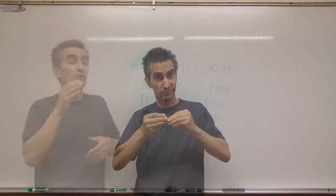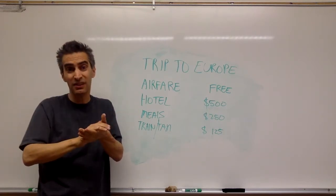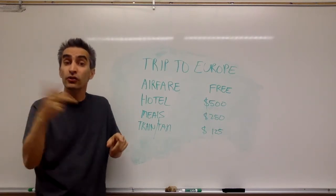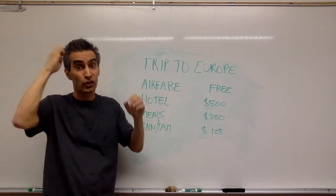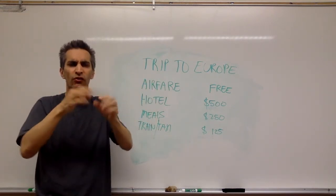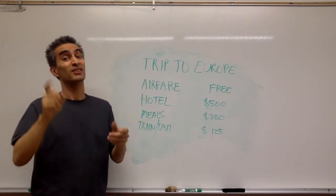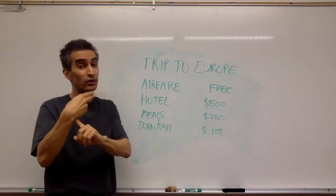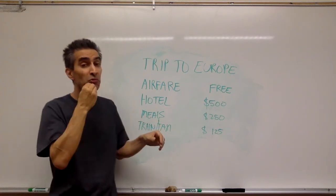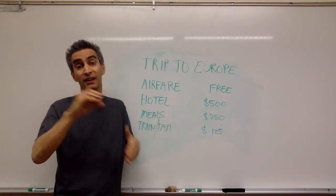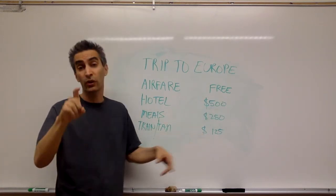First, we're going to have a little story. Suppose you and your girlfriend or your boyfriend, or maybe your wife or your husband — it doesn't really matter — but two of you, you won a free airfare to Europe. The two of you get this free airfare and you're going to Europe. But you still got to pay for your hotel, which is $500, your meals, which cost $250, your train and your taxi, and it costs $125.